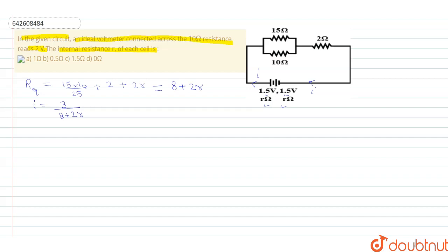Now the condition of the question says voltmeter connected across 10 ohm resistance gives the reading of 2 volt. It means that the circuit has excluded this 2 ohm resistance in this situation.